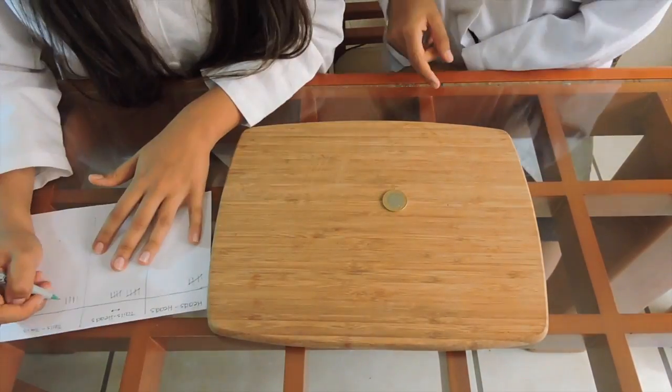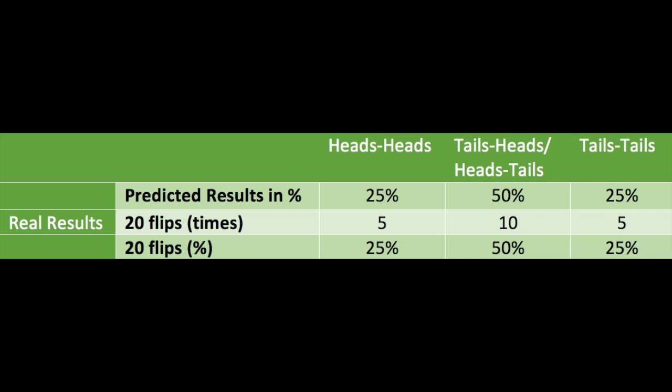Now that we finished our first 20 flips, let's check our results. We got 5 out of 20 heads-heads, 10 out of 20 tails-heads, and 5 out of 20 tails-tails. As you can see, we got the same as the predicted results we mentioned before.